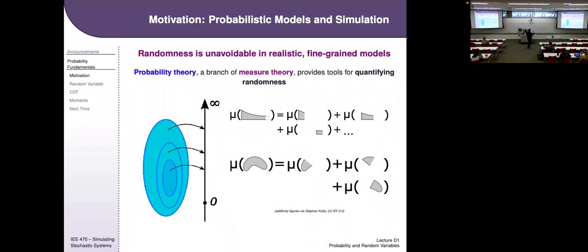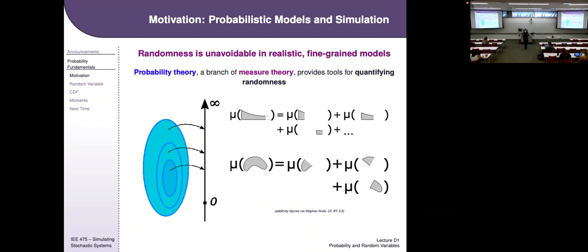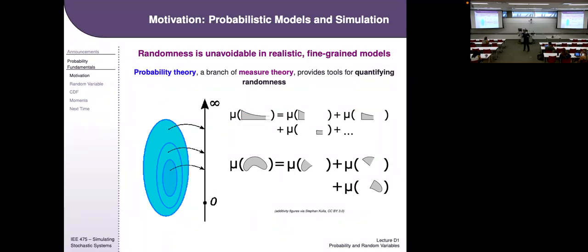Probability theory is a branch of measure theory. Measure theory is the branch of mathematics that allows you to measure the size of sets in a way that makes sense. If you have a good way to measure sets, then if you cut a set into pieces, each measure of each individual piece should be smaller, and all the measures should add up to the whole. That's really what measure theory is about.